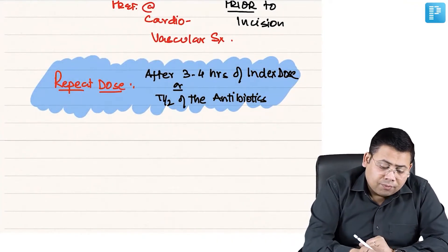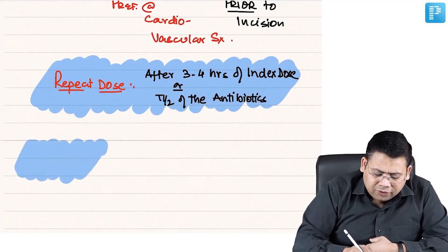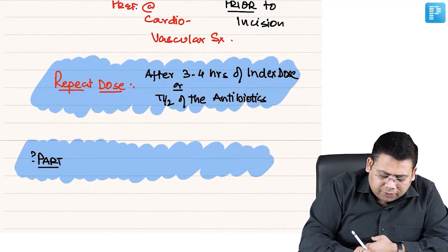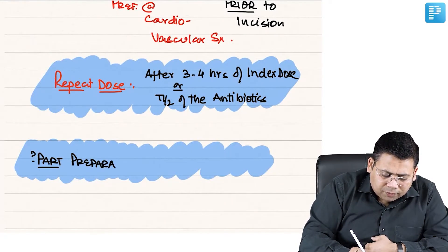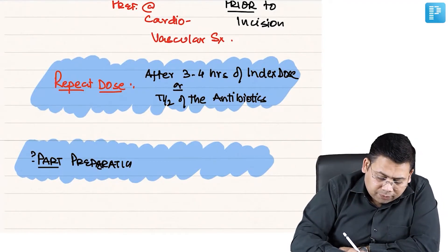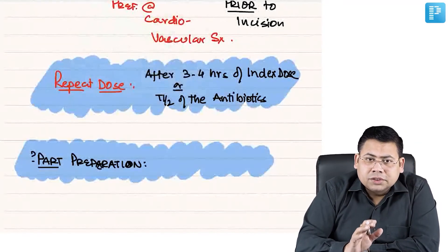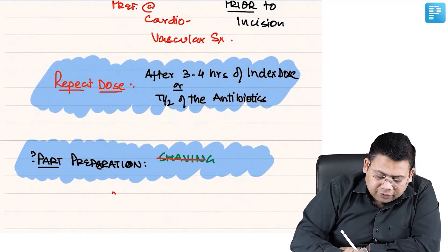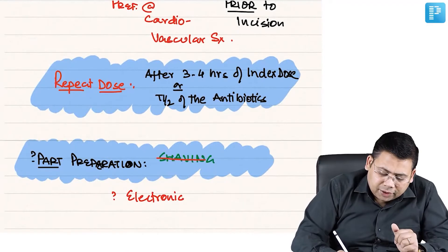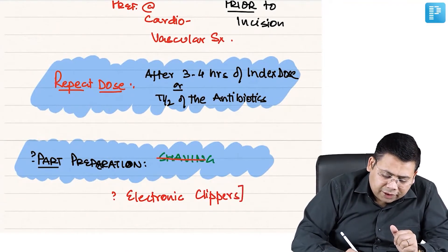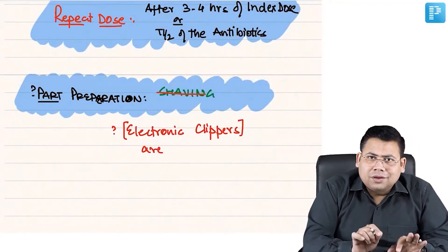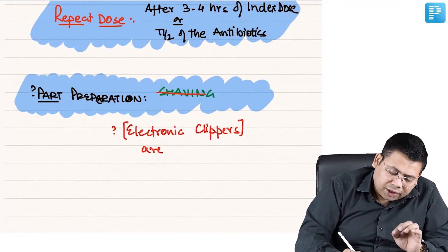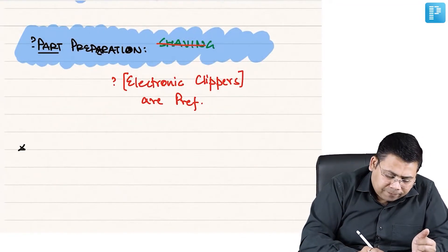There is also controversy around part preparation before surgery. Shaving is not advocated at all. Instead, electronic clippers — trimmers — are preferred. This is because shaving with a razor causes micro-abrasions, which actually potentiate SSI. Electronic clippers avoid this risk.